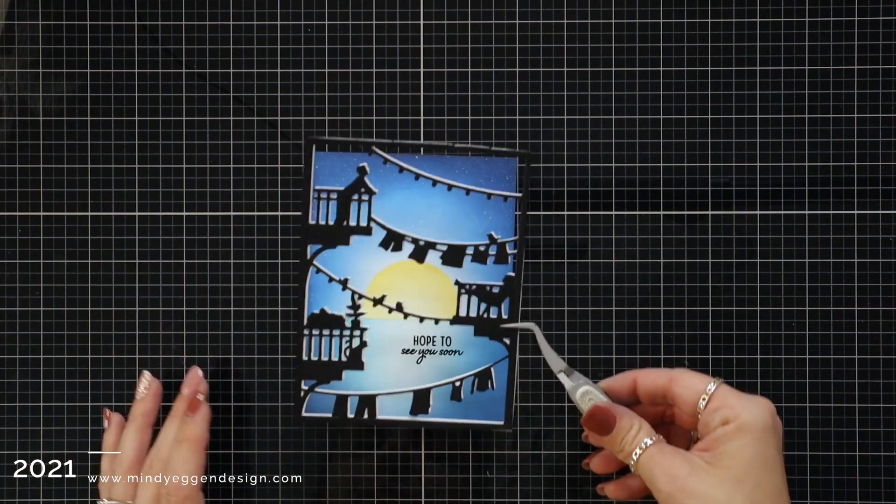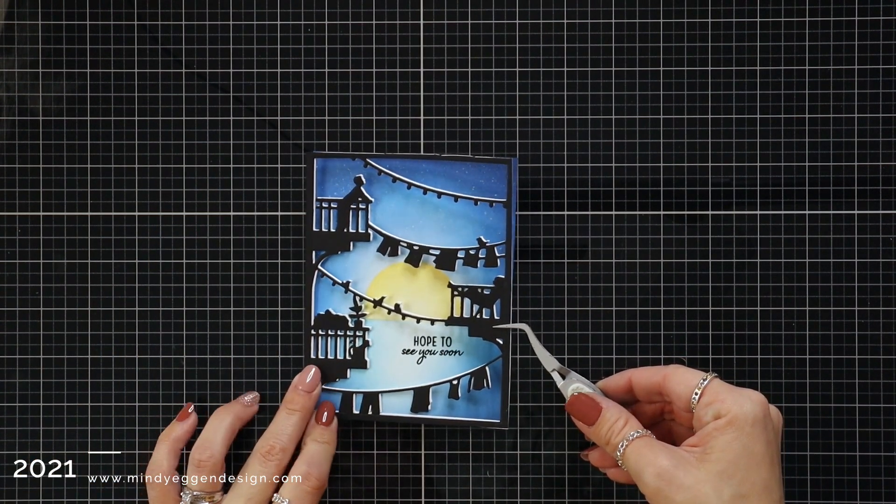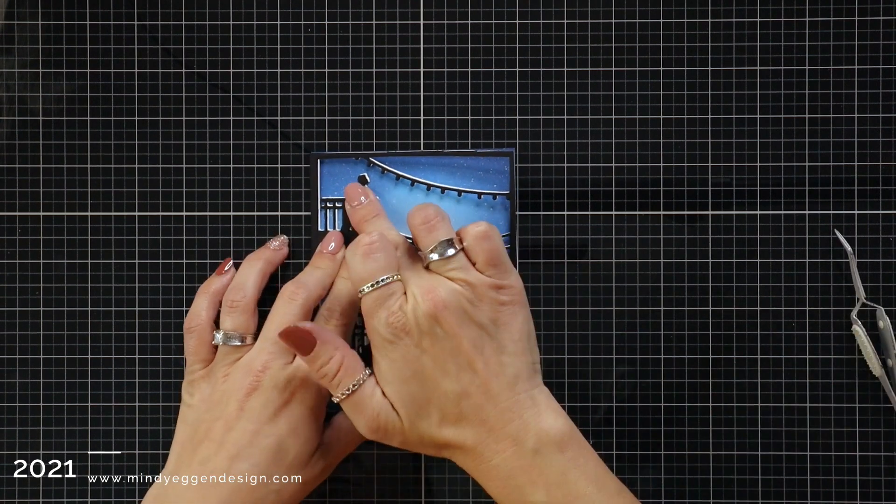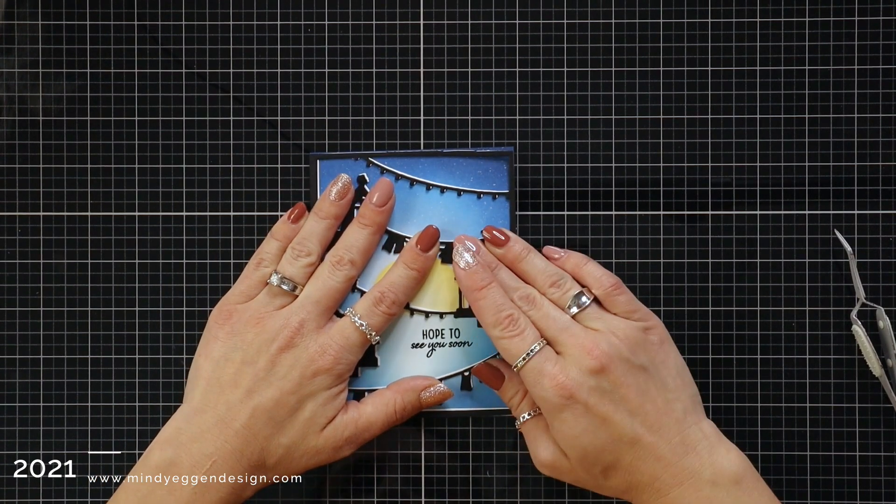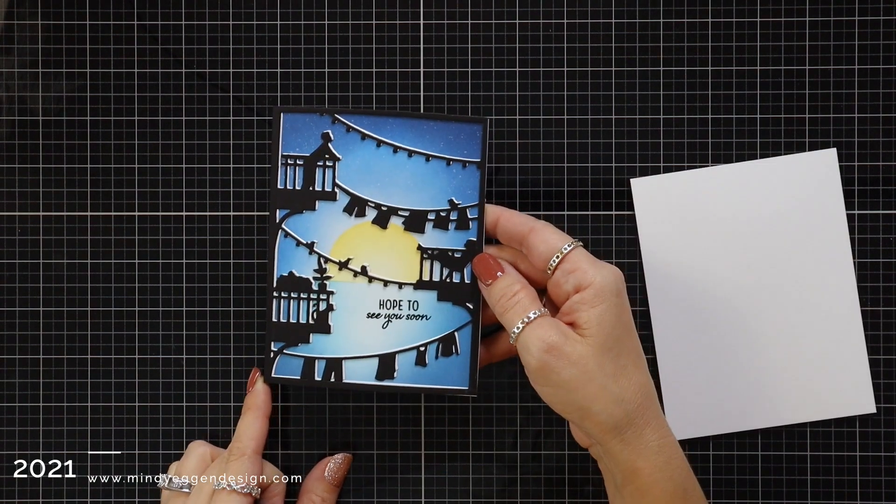I sped the process up with my heat tool, so it is dry. Then I added liquid glue to the back of my die cut piece and added that right on top of my blended background. We have this beautiful scene in the background of the water and a nighttime sky. Any type of sky really would work with this.